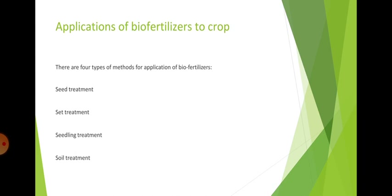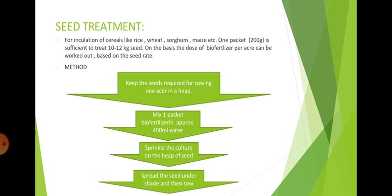There are some applications of biofertilizers to crops. Methods for application include seed treatment, set treatment, seedling treatment, and soil treatment. For seed treatment of cereals like rice, wheat, sorghum, and maize, one packet of 200 grams is sufficient to treat 10 to 12 kg of seed. Keep the seeds required for sowing one acre in a heap, mix one packet of biofertilizer in approximately 400 ml of water, sprinkle the culture on the heap of seeds, spread the seeds under shade, and then sow.